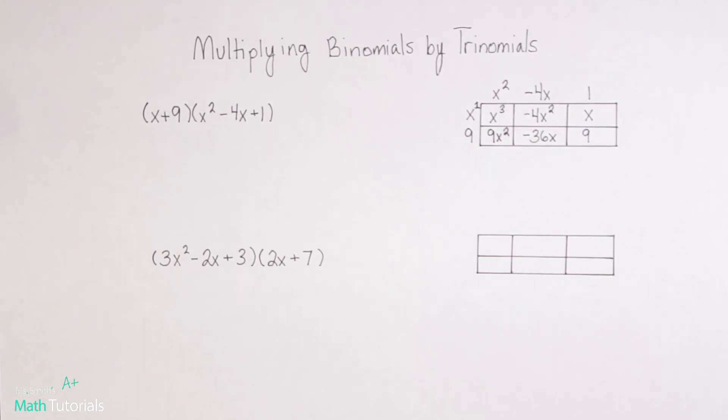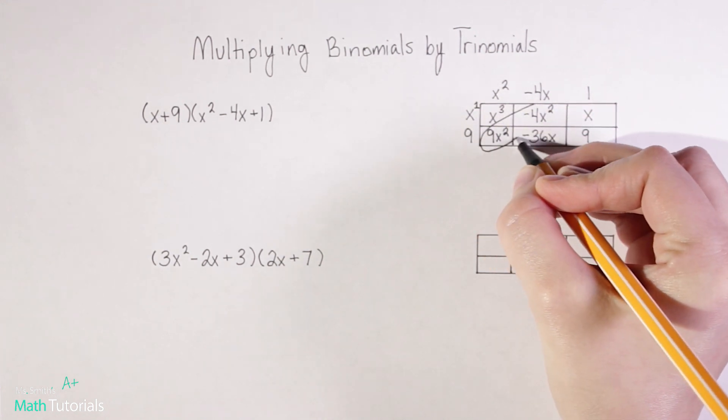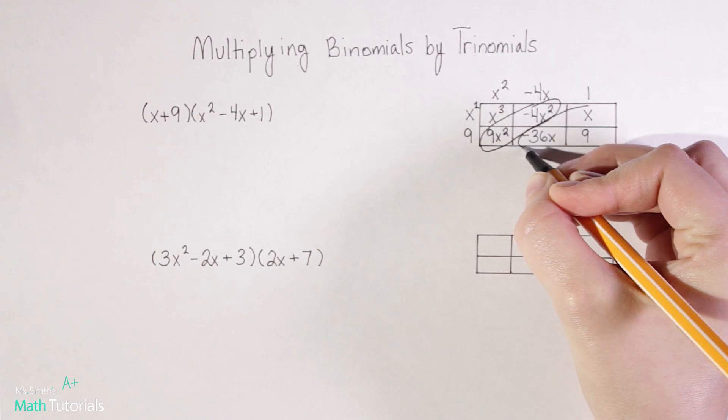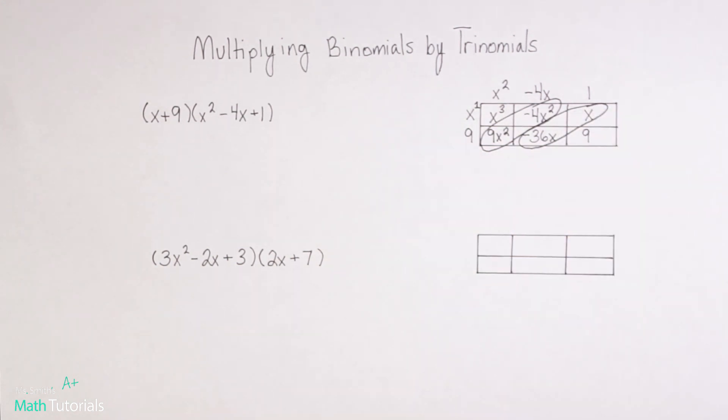Okay, so in this box method, our next step is to combine any like terms that we have. So in math one, when we do this, it's always going to end up being these two terms, and these two terms. And we're going to combine those terms through adding.